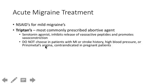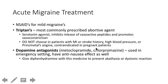Triptans cannot be given to pregnant patients either. Dopamine agonists like metoclopramide and chlorpromazine are good options because they have both anti-nausea effects and help with the headache. However, if you give one of these agents, you should also give diphenhydramine to prevent akathisia or a dystonic reaction, since these medications can have effects similar to antipsychotic agents.